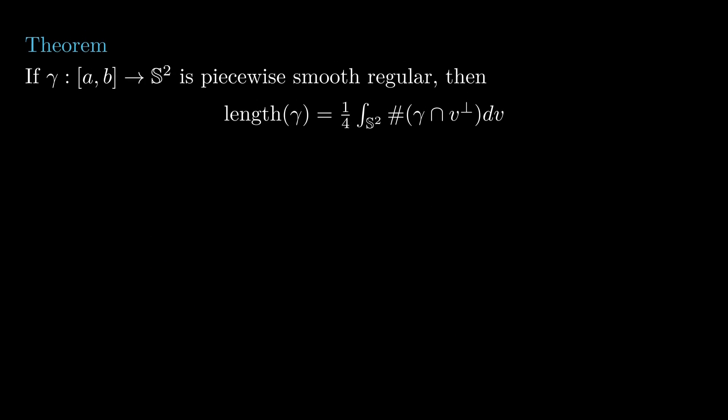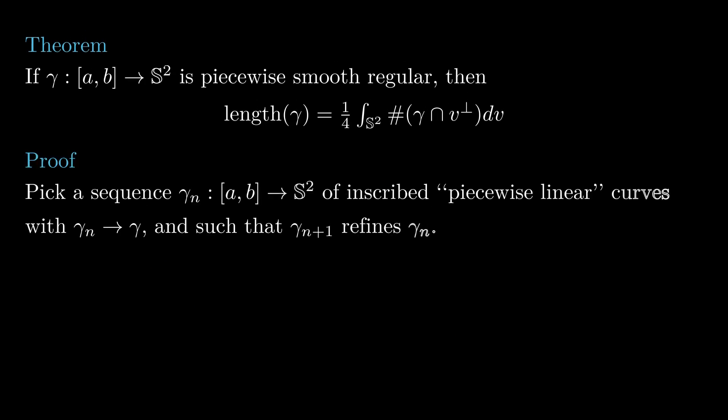For an arbitrary piecewise smooth regular curve gamma, we can find a sequence gamma n of inscribed piecewise linear curves, such that gamma n plus 1 refines gamma n for each n, and the length of gamma n converges to the length of gamma as n goes to infinity.